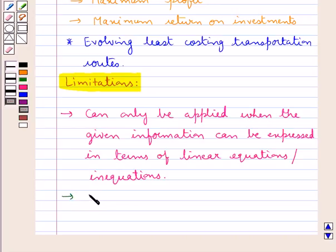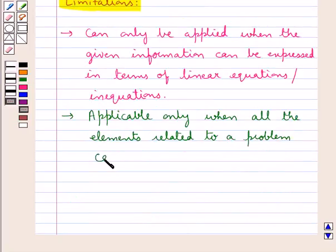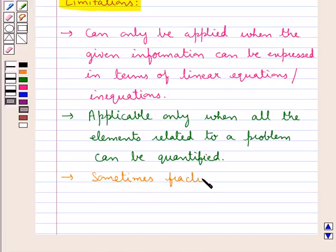The linear programming techniques are applicable only when all the elements related to a problem can be quantified. That is the qualitative factors like the human relations, behaviors, credibility, etc. are not taken into account when linear programming techniques are being applied.